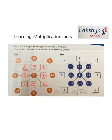Two sevens are 14, two nines are 18, four twos are 8, six twos are 12, eight twos are 16, three twos are 6, ten twos are 20, and two twos are 4. Try to create the spider diagram for any two other tables.